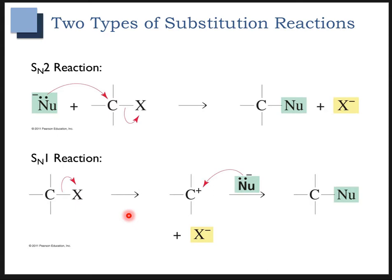So first we had the leaving group fall off, then we have a carbocation intermediate, and then the nucleophile comes in.